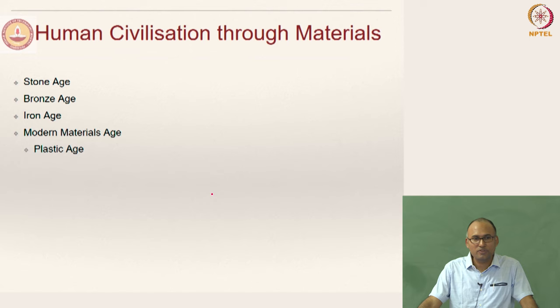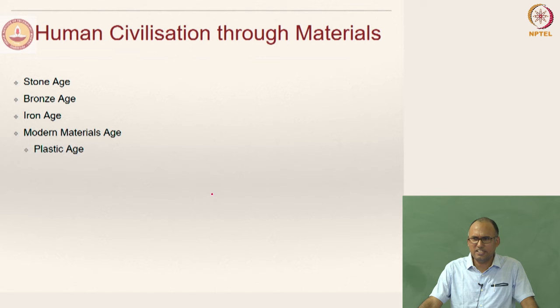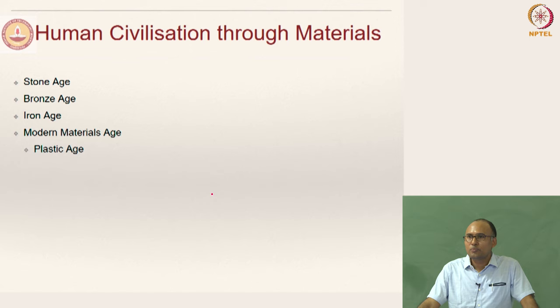Modern materials include plastics. We have seen the development of plastics. Most of you were not born when the plastic revolution started — all of you are late 90s or 2000s. You have not seen the plastic revolution shaping up. There were no PET bottles when I was a kid. We used to carry a water bottle and fill it at every train station. Now we just sit in our seat and buy water in PET cans.